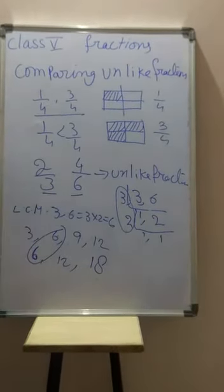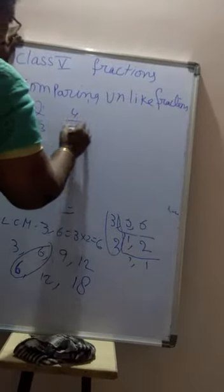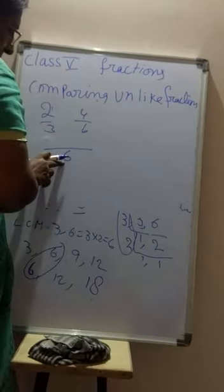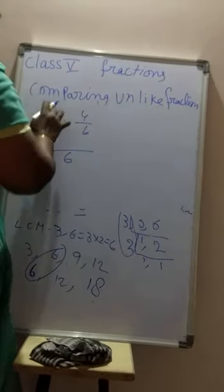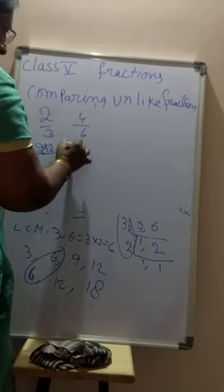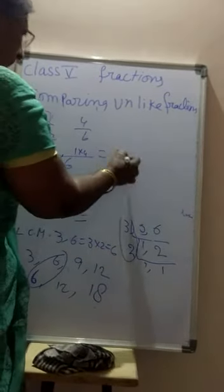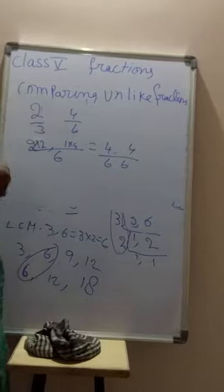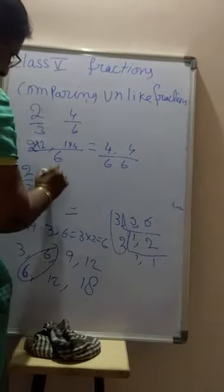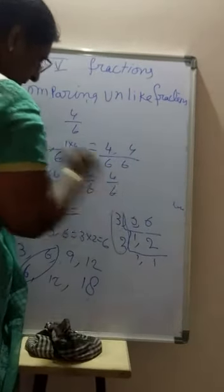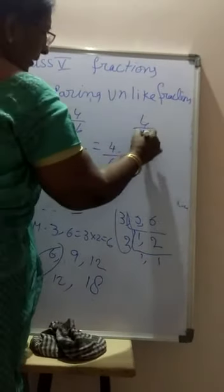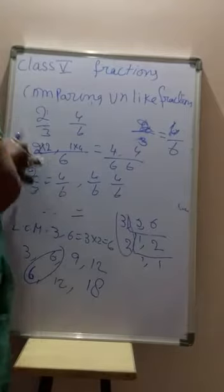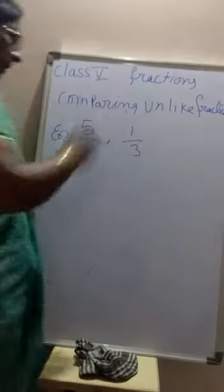For 2 by 3 and 4 by 6, we make the denominators equal. How many times is 3 divisible into 6? 2 times. So multiply numerator 2 by 2 to get 4 by 6. For 4 by 6, divide 6 by 6 — that's 1 time, so 1 into 4 gives 4 by 6. Both are equal — 2 by 3 equals 4 by 6, and 4 by 6 equals 4 by 6. Both fractions are equal.